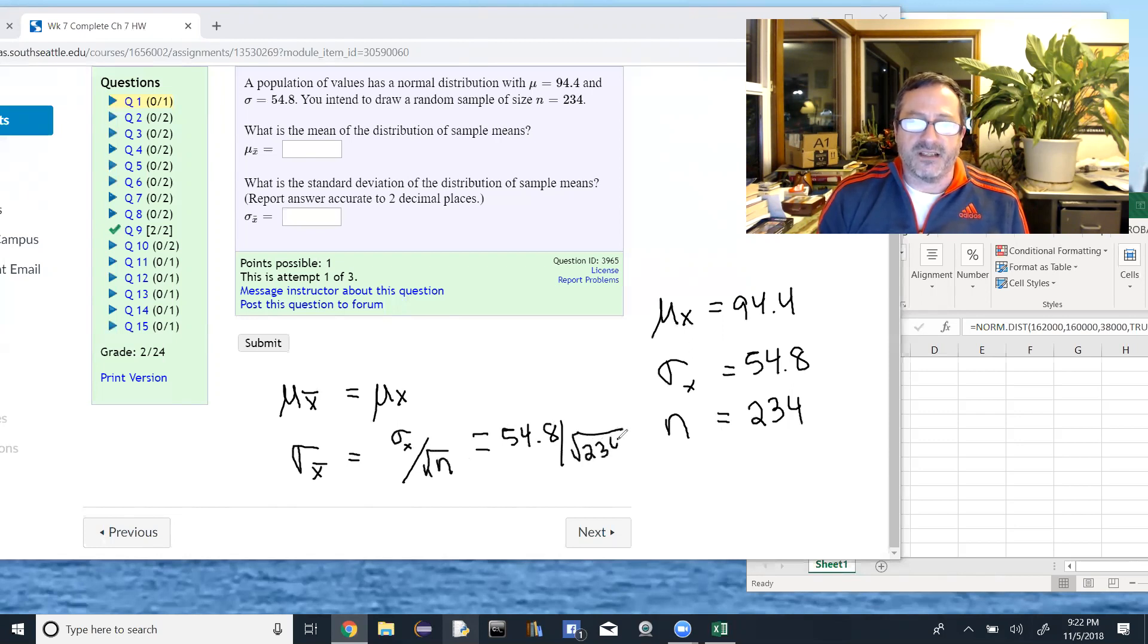And later on the problems, it's always to identify whether you're talking about a probability of an individual or the probability of the sample, and if it's the sample you then have to know what size n, and then what changes is that the standard deviation gets divided by the square root of n for the new standard deviation. All right, hopefully that helps. I'm going to close this guy down if I can figure out how to do that.